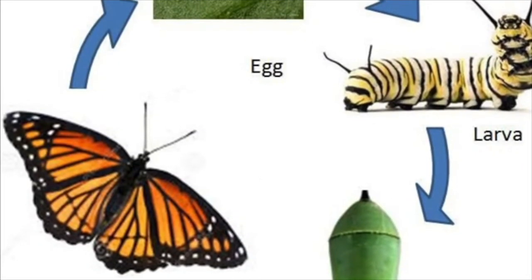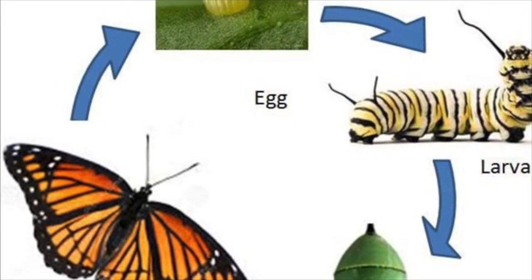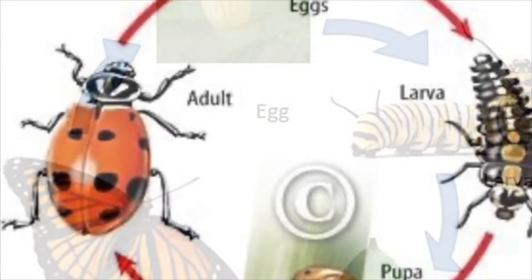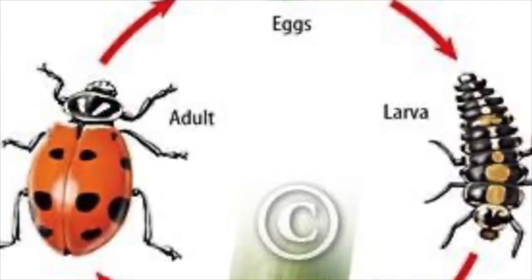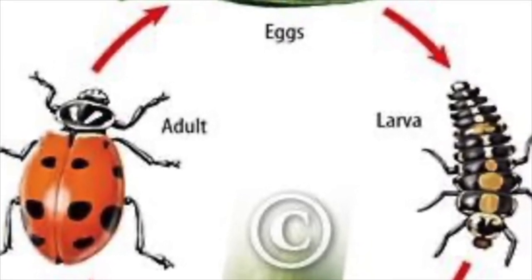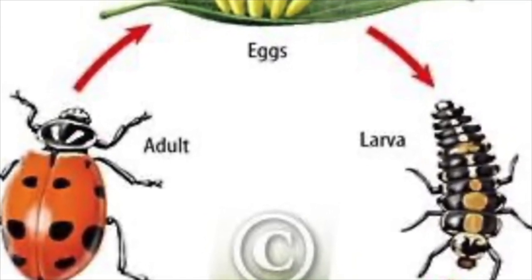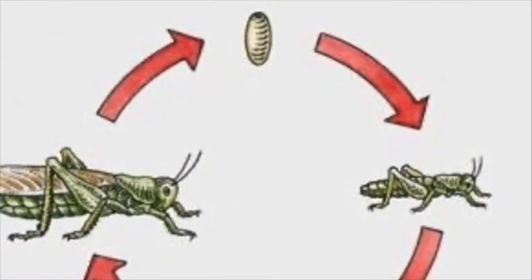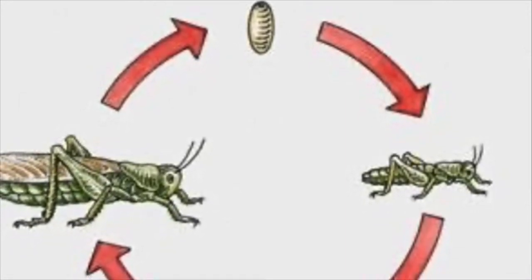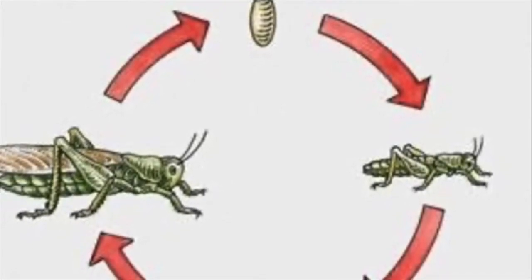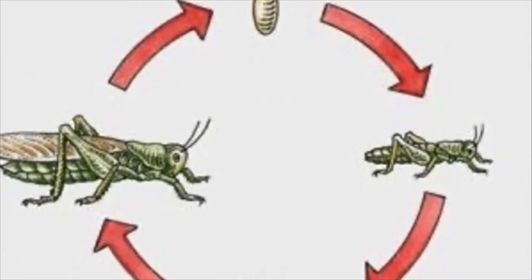Depending on the type of insect, it will have a different type of baby. There are two different types of metamorphosis. One is called complete metamorphosis — that's what the butterfly and the ladybug go through, where the baby is called a larva and doesn't look anything like the adults. It has four stages: egg, larva, pupa, and then it emerges as an adult with wings. But in an insect like a grasshopper, it emerges from the egg as a miniature adult without wings, then continues to shed its skin or molt several times until it grows its wings. That is called gradual metamorphosis.